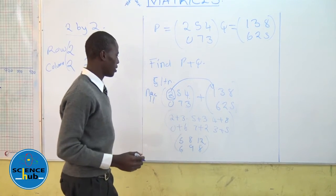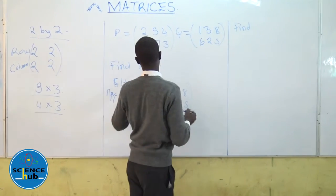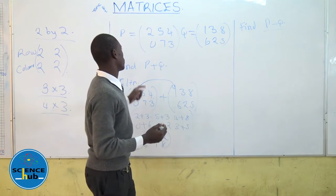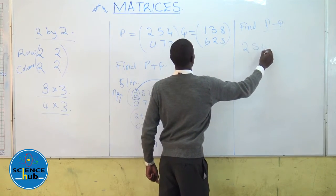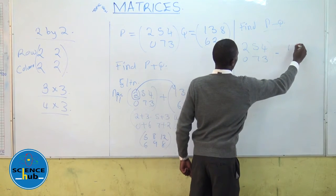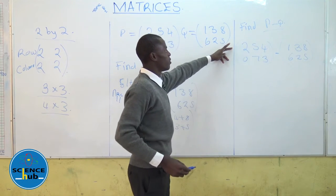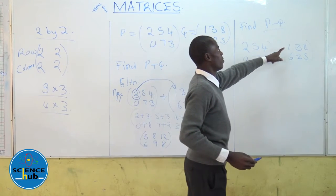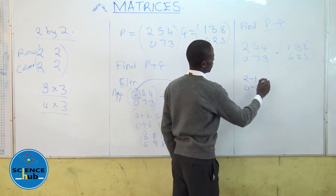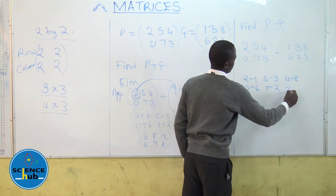Now you are given P minus Q. You still follow the same procedure, where you take matrix P minus matrix Q. You take the first row, first column, minus the first row, first column. Hence it will be 2 minus 1, 0 minus 6, 5 minus 3, 7 minus 2, 4 minus 8, and 3 minus 5.